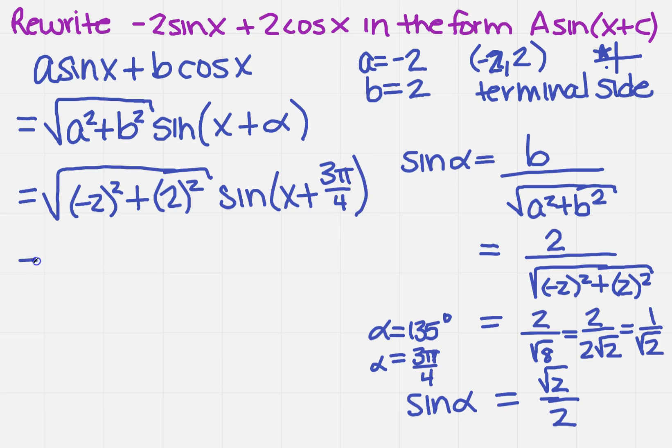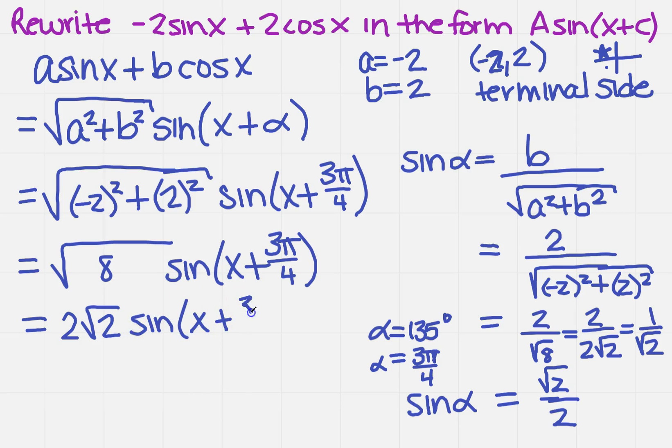I need to simplify what I can. We've already done the square root of a² + b², right? We did it over here on the right-hand side, and that was √8, and I still have my sine. And then I can simplify √8, which gives me 2√2 sin(x + 3π/4).